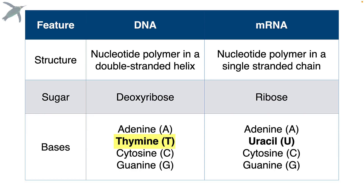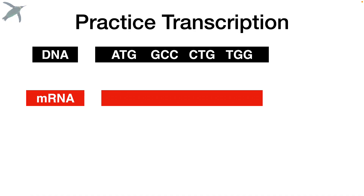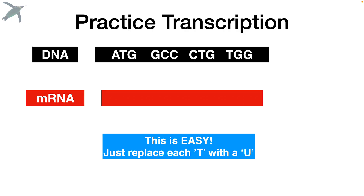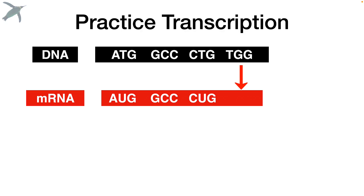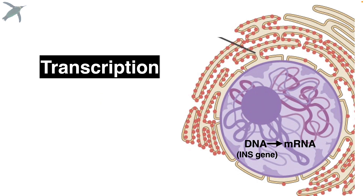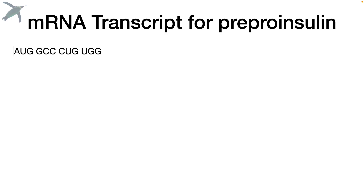We're going to practice transcription — going from DNA to the messenger RNA transcript. All you do is replace every thymine with a uracil. Try it: ATG becomes AUG. GCC stays GCC. CTG becomes CUG. TGG becomes UGG. And that's it — transcription is happening in the nucleus. We're making the transcript; you just did the first four. Now you've made a copy which can leave the nucleus, and if it's destroyed, it doesn't matter — you still have the original.